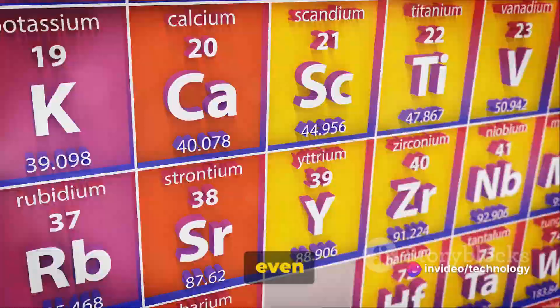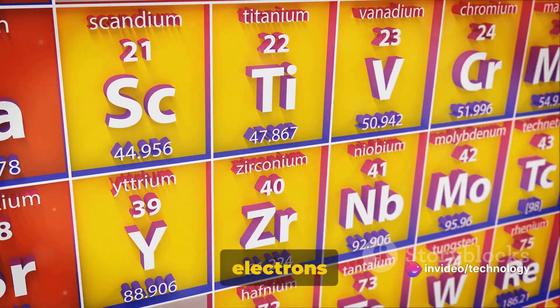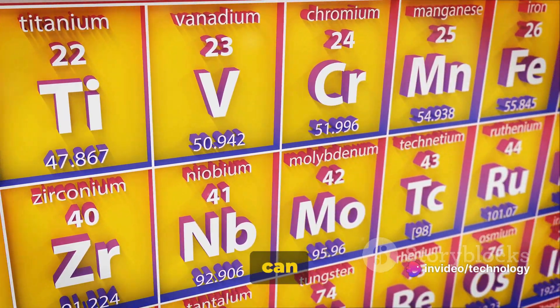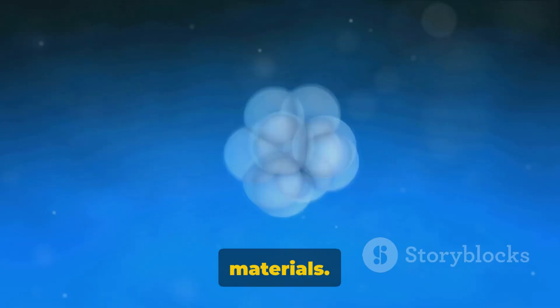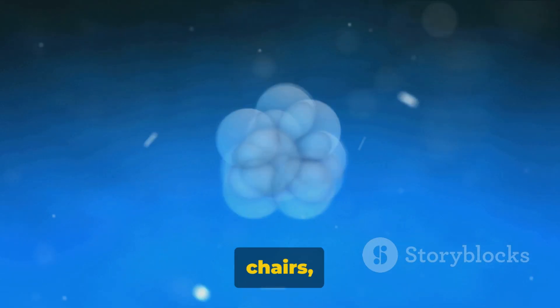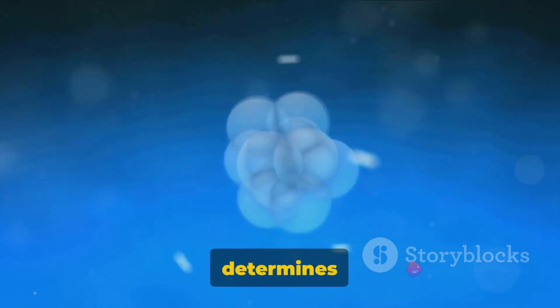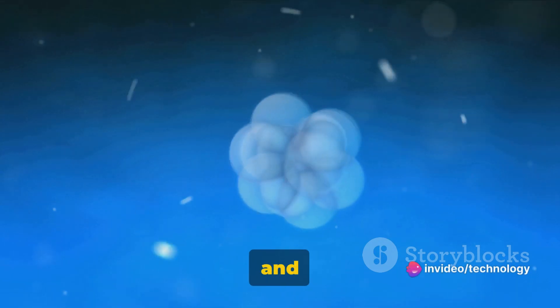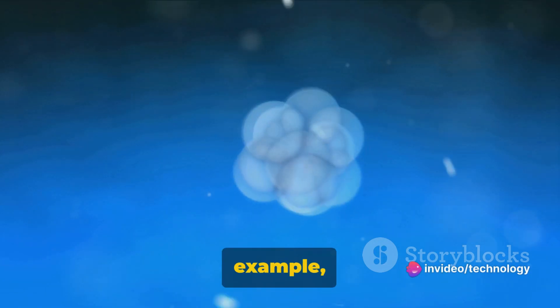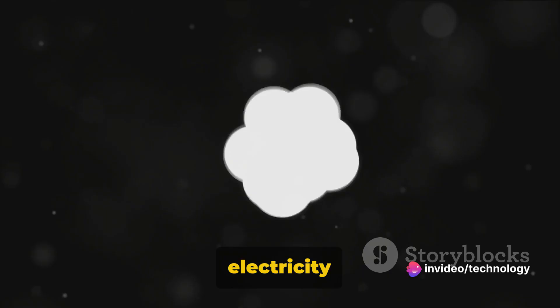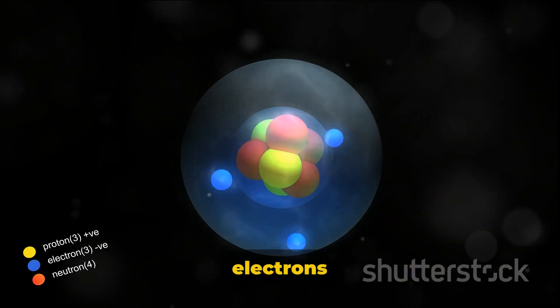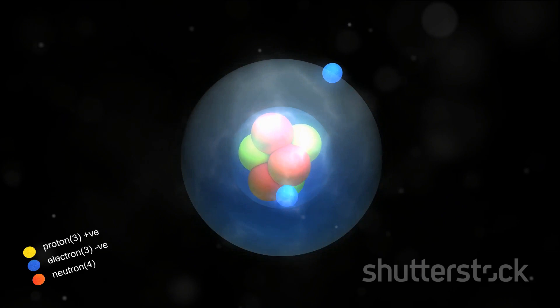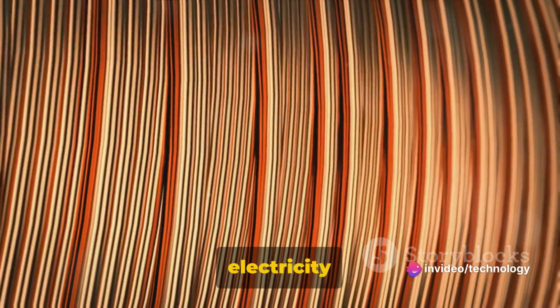Now this is where it gets even more interesting. The way these electrons are arranged in an atom can significantly affect the properties of materials. It's like a game of musical chairs. The number of chairs or energy levels in an atom determines how many electrons can sit and where they can sit. For example, metals are good conductors of electricity because they have a lot of free electrons that can move around easily. On the other hand, insulators like rubber have their electrons tightly bound, making it hard for electricity to flow.